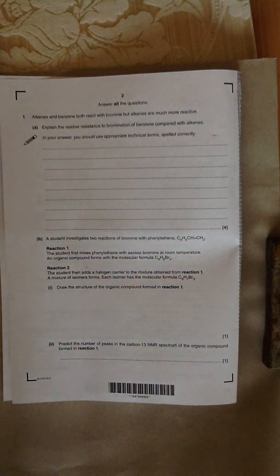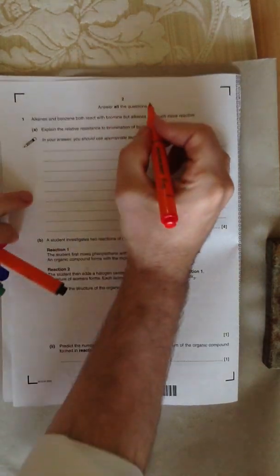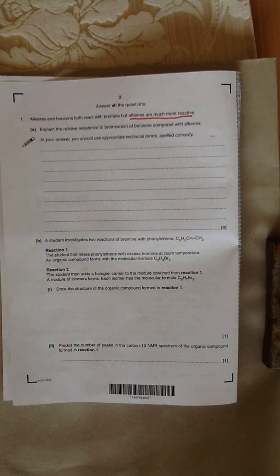The question starts by saying alkenes and benzene both react with bromine, but alkenes are more reactive. That's an important point. Explain the relative resistance to bromination of benzene compared to alkenes. In your answer, you should use appropriate technical terms spelled correctly.